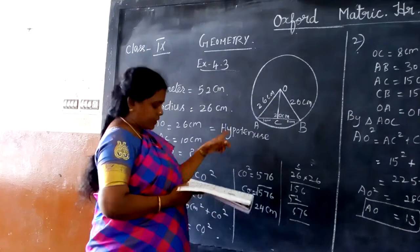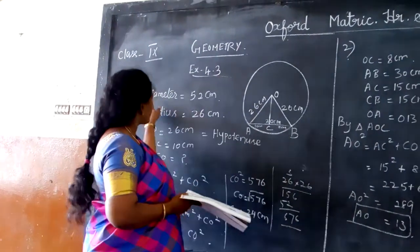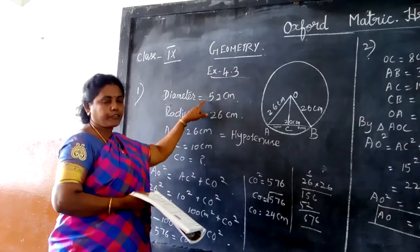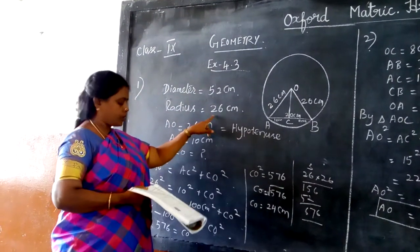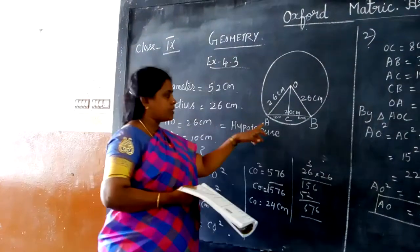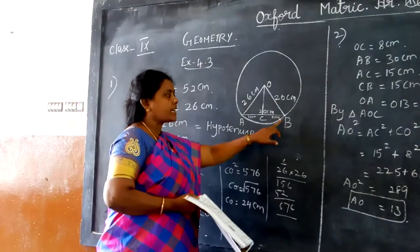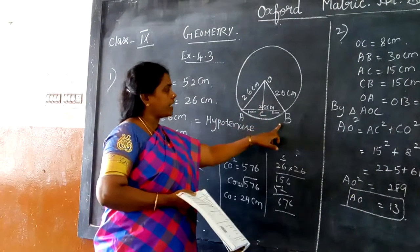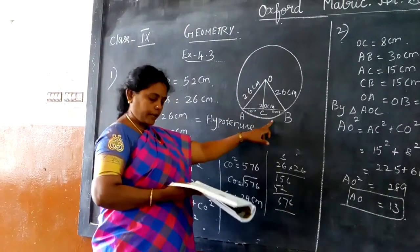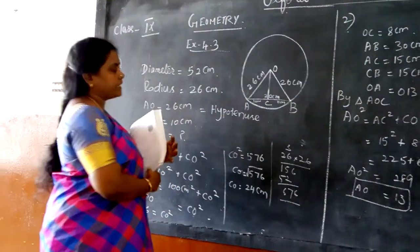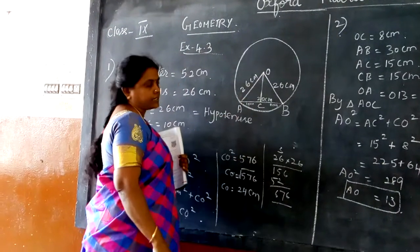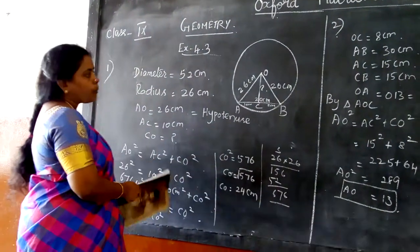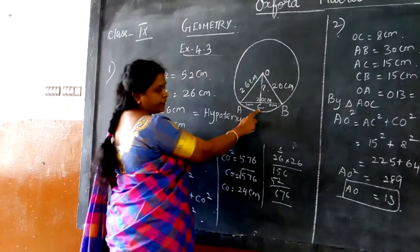First draw one circle. It is given that diameter is 52 cm, so write the values also — it is 52 cm. If diameter is 52, automatically we know the radius will be half of the diameter, so the value is 26 cm. The length of one of the chords is 20 cm. The chord never passes through the centre of the circle. So AD is the chord, and we need to find the distance of the chord from the centre O — that is, the value of OC.